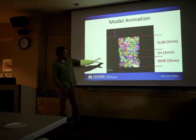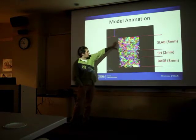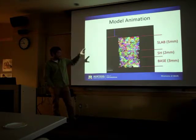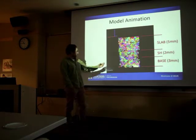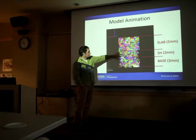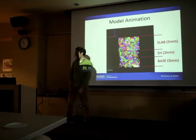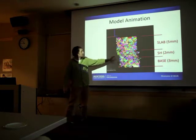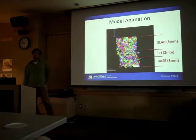Here's a little animation. Down here there's a base layer, then some two-millimeter surface hoar crystals in the middle, and above there's a slab. This is based on an actual sample - we grew a surface hoar layer in the lab and put a slab of snow on top. As we go through this shear test, the base layer pretty well stays intact, the slab layer pretty well stays intact, and the surface hoar layer is getting deformed - which is exactly what we'd expect. It's a good visual sanity check.